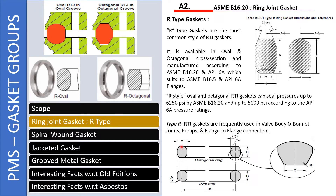This is a circular portion and these are the cross sections — cross section-wise it will look exactly as octagonal. All these dimensional details, A and H and these degrees, are defined in ASME 16.20. These cross sections are manufactured based on 16.20 and API 6A, which will be suitable for 16.5 and API 6A flanges. API 6A is associated with well and offshore engineering. R-type oval and octagonal can seal pressures up to 6,250 PSI, and up to 5,000 PSI according to API 6A.